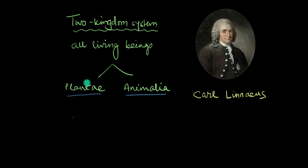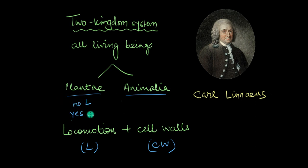Plantae had all the plants and Animalia had all the animals. And he mainly classified them on the basis of locomotion and cell walls, the organism's ability to move from one place to another, and the presence or absence of cell walls. Plants stayed fixed in a place and had cell walls, so they went in one group. And animals could move around and they didn't have any cell walls, so they went in another group.